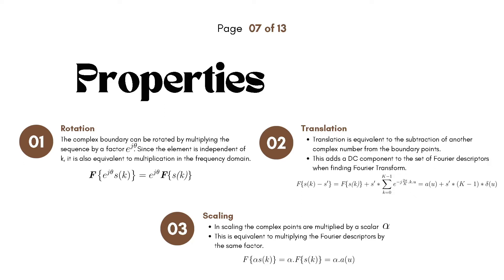Next is scaling. In scaling, just like rotation, we multiply the complex number by a scalar factor alpha. Since alpha is independent of k, the Fourier transform of alpha times s(k) equals alpha times the Fourier transform of s(k), or alpha times a(u). Thus, multiplying by a scalar in the complex domain is equivalent to multiplying it in the frequency domain.